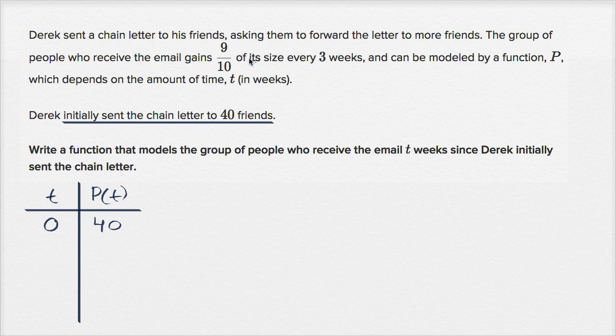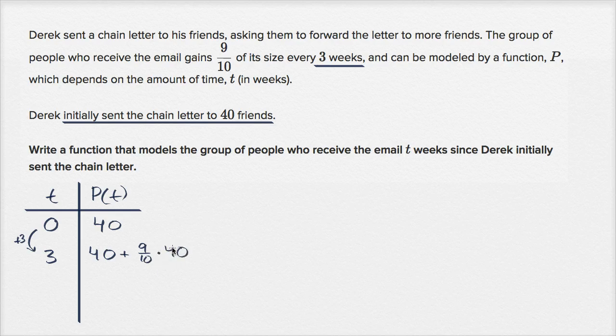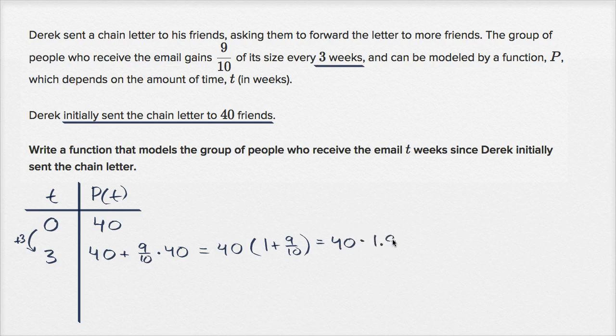Now, what's an interesting time period here? The number of people who've received the email gains 9 tenths every three weeks. So after three weeks, what is p of t going to be? Well, it's going to gain 9 tenths of its size. So it's going to be 40 plus 9 tenths times 40, which equals 40 times 1 plus 9 tenths, or 40 times 1.9.